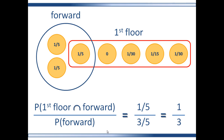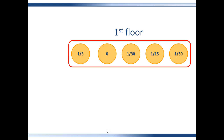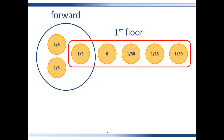The probability of getting a first floor dweller given you get a forward talkative patient is one-third. In the psychiatric facility, what is the probability of getting a forward talkative patient given you get a first floor dweller? This is flipping it again. This time, in the psychiatric facility where each patient does not have an equal probability of being sampled, the intersection between lavender and first floor dweller is still one patient with one-fifth probability of being sampled.